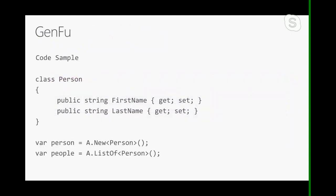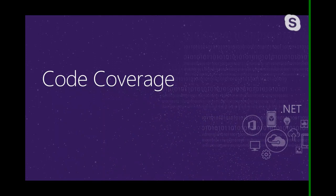Here's an example using GenFu. We have a Person class and we can create a single person or a list of people. Behind the scenes, GenFu generates data for the first name and last name properties of the Person class. If you want to test a scenario with a list of a thousand people, you no longer need to write code to create all of them — fake data generators will do that for you.